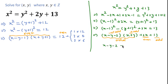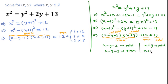So if x minus y minus 2 is odd, then x minus y minus 1 will be even. And if x plus y is odd, then x plus y plus 1 will be even. So we can confirm that (x minus y minus 1) is even and (x plus y plus 1) is also even.